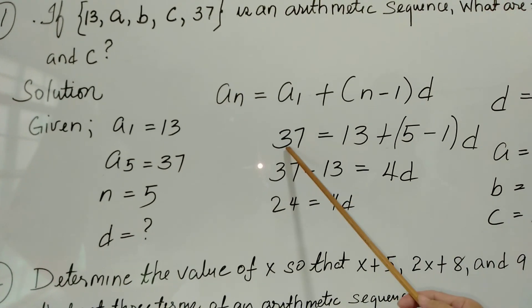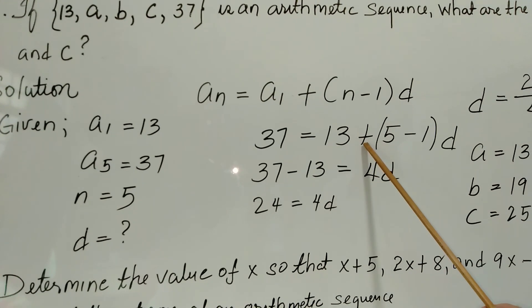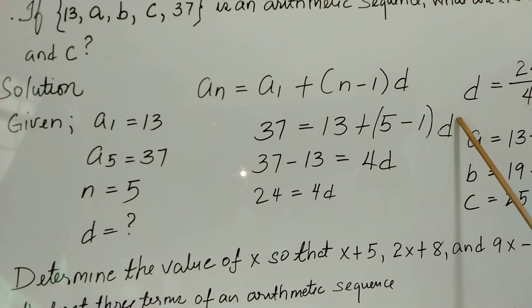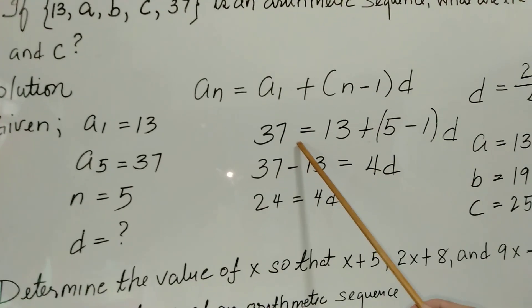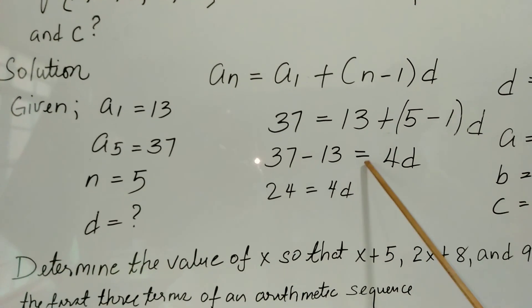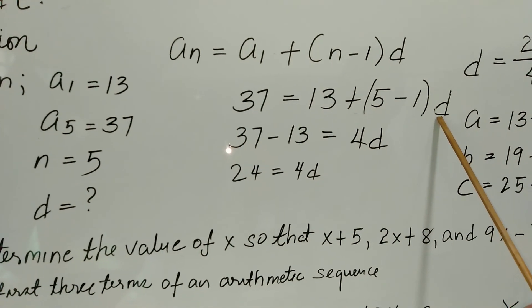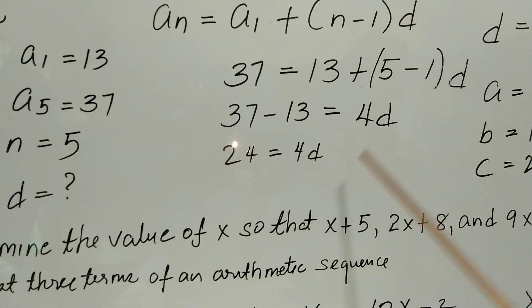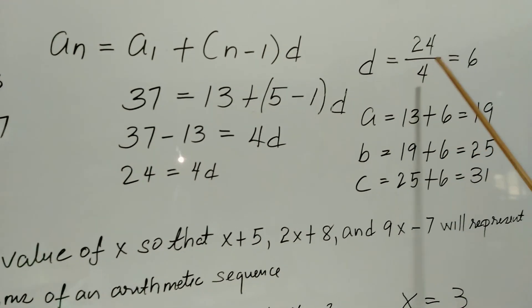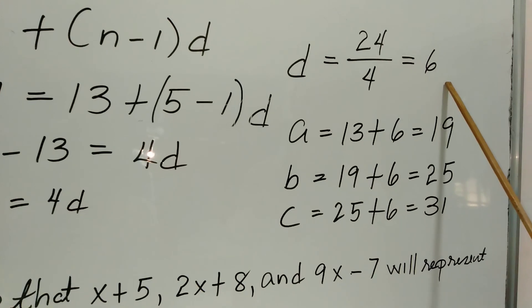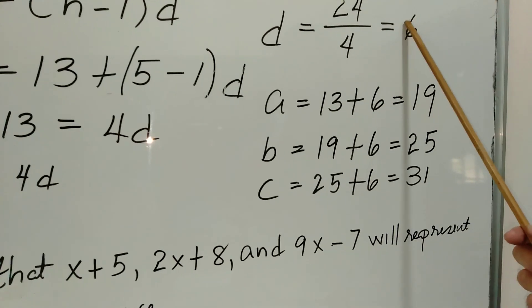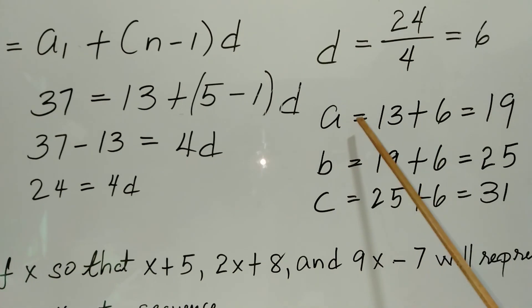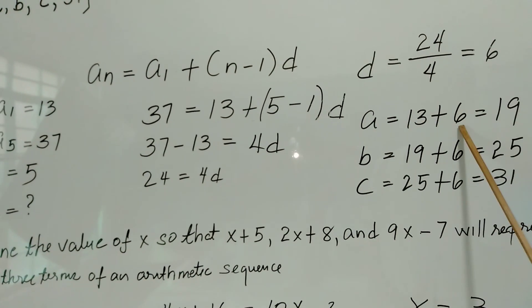Writing the formula: a sub n is equal to a sub 1 plus n minus 1 times d. Substituting all the givens: 37 equals 13 plus 5 minus 1 times d. Transposing 13 to the left side: 37 minus 13 equals 4d. So 24 equals 4d. Dividing both sides by 4, we get d equals 6. This is our arithmetic difference.